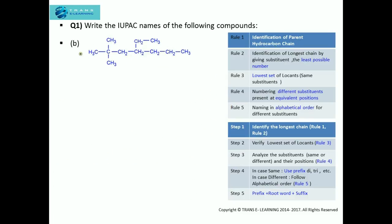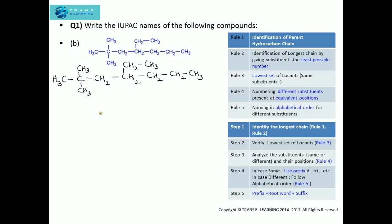Next question: write the IUPAC name of the following compound. First, let us analyze the longest chain as per step one, giving the substituents the least possible number. If I start from one end, the first substituent gets position 4, but if I start from the other end, the substituent gets position 2 — so I start from here: 1, 2, 3, 4, then going one way gives 5, 6 (six carbons), but continuing straight gives 5, 6, 7. This is the longest chain identified by giving the least possible number to the substituents.